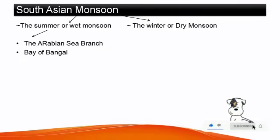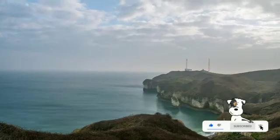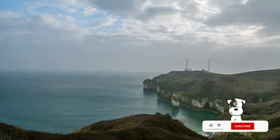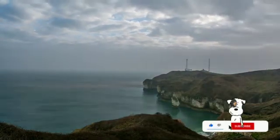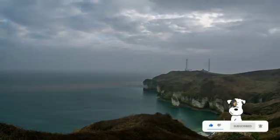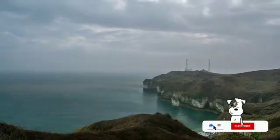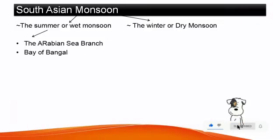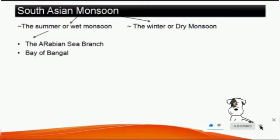The most notable environmental feature each year in the Indian Peninsula is the annual burst of the summer monsoon. Prominent onshore winds spiral into South Asia from the Indian Ocean, bringing life-giving rains to the vast subcontinent. These are known as the summer or wet monsoon. The South Asian monsoon is divided into two parts: the summer or wet monsoon, and the winter or dry monsoon.